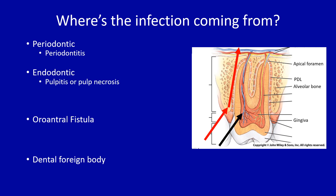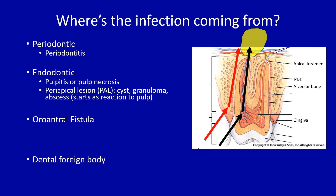There are also endodontic causes such as pulpitis or pulp necrosis, where there's an infection or inflammation in the tooth pulp. This can spread to the apex of the tooth or outside the apex and cause a periapical lesion — either a cyst, granuloma, or abscess — starting as a reaction to the pulp.